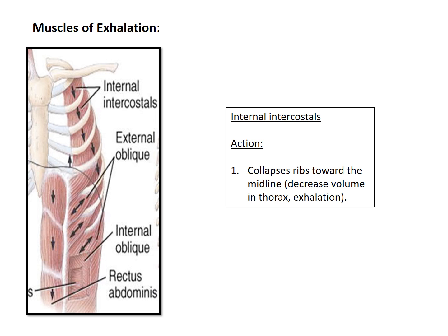For muscles of exhalation, we want to focus on the internal intercostals. These muscles are involved in exhalation — more technically, this muscle collapses the ribs towards the midline, which effectively decreases the volume in the thorax and forces air out of the body.